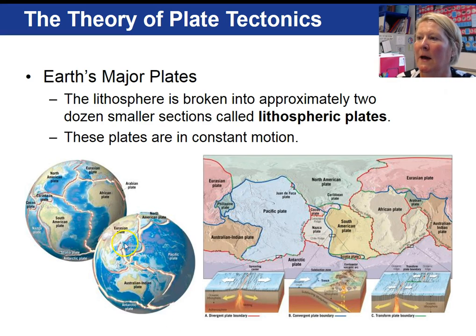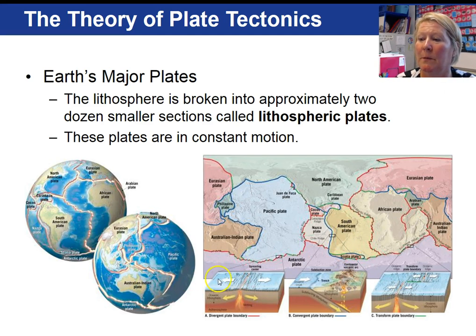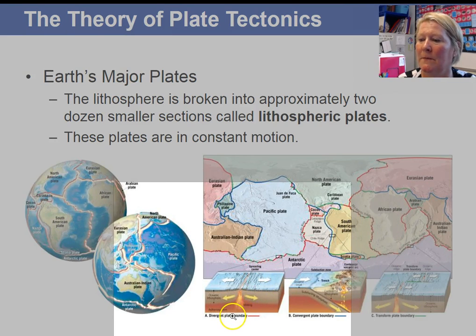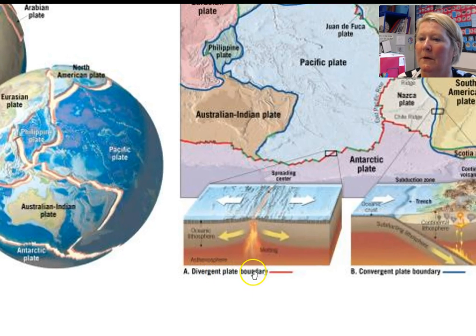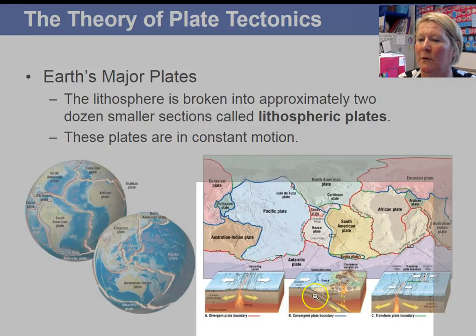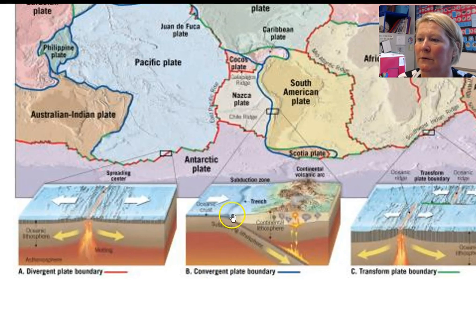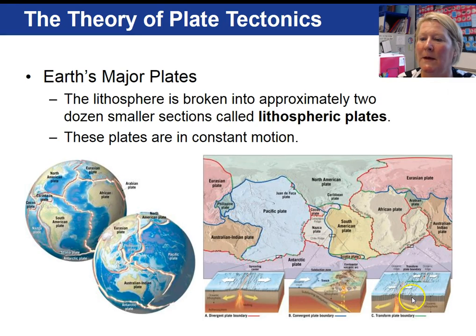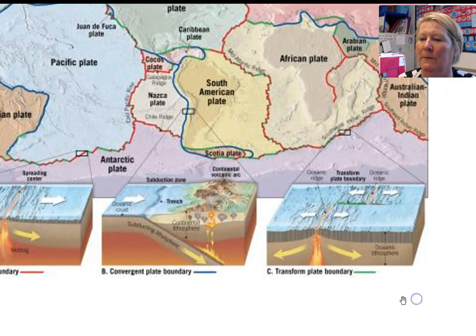This first slide shows that the earth overall is broken into many different pieces, and these are called lithospheric plates, and the plates are in constant motion. Sometimes tectonic plates are spreading apart and we call that a divergent plate boundary. When tectonic plates are coming together we call it a convergent plate boundary. And finally the third boundary type is a transform fault boundary. So let's take a look at each of these in more detail.